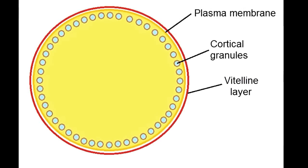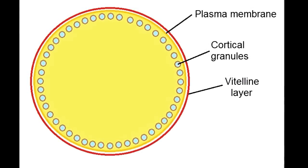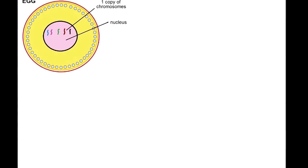Remember the granules and the layer. You will see how they work in just about a minute. Importantly, the egg is haploid. The nucleus contains only one copy of every chromosome.